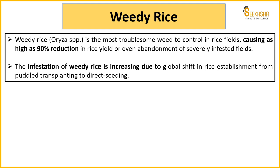The weed rice infestation is increasing significantly. Earlier we had puddled transplanting, but now direct seeding is being adopted. In the case of puddled transplanting, chances of weed rice were less. Direct seeding is a major reason for the increase in weed rice.